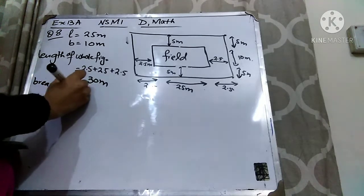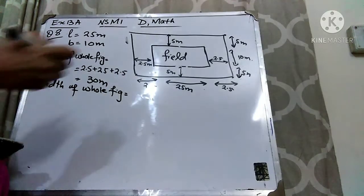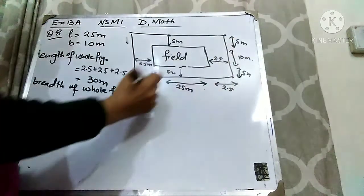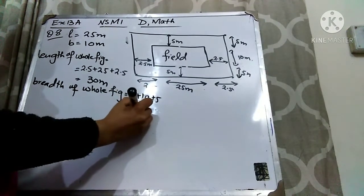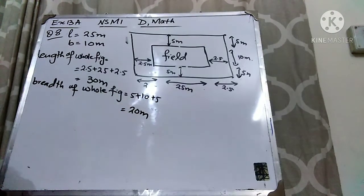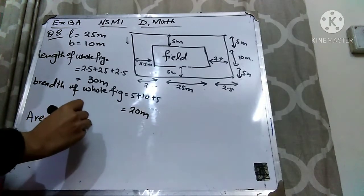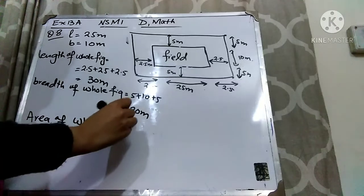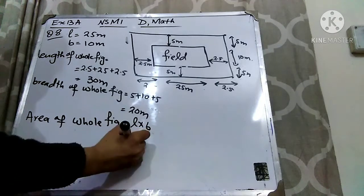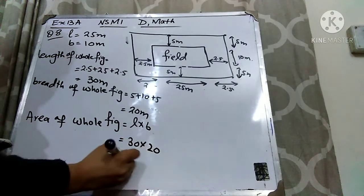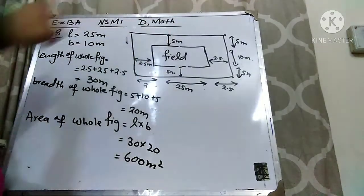Breadth of the whole figure: 5, 10, and 5. So 5 plus 5 is 10, and 10 plus 10 is 20 meters. So the breadth of the whole figure is 20 meters. Now we can find out the area of the whole figure. As it is rectangular, the formula is length multiplied by breadth. Length is 30 and breadth is 20, so the area is 600 meter square.